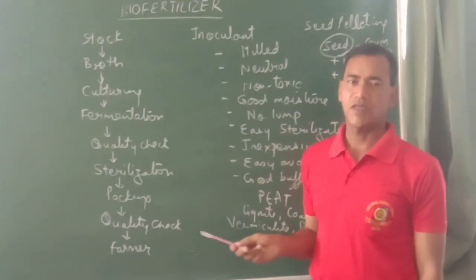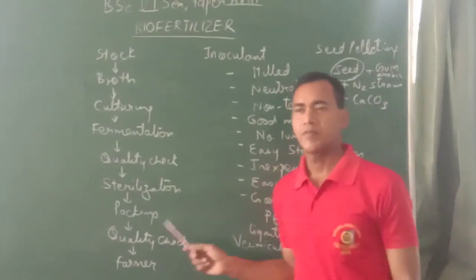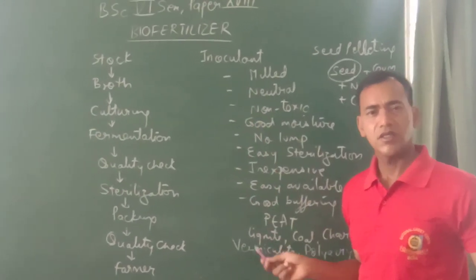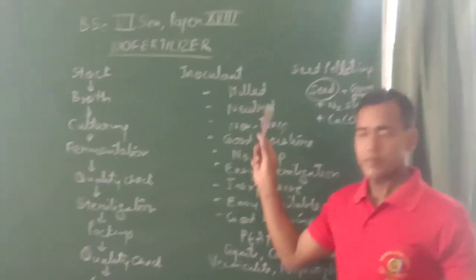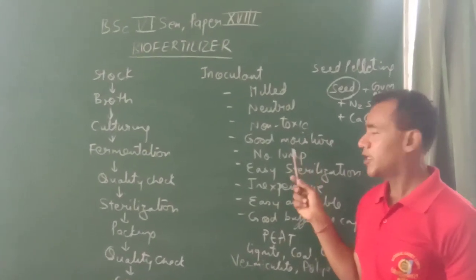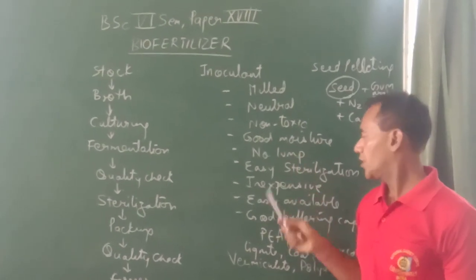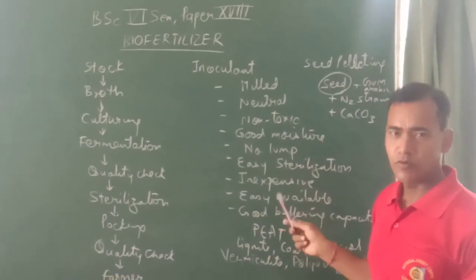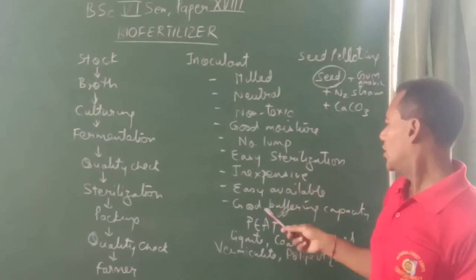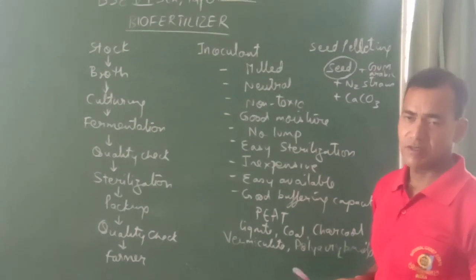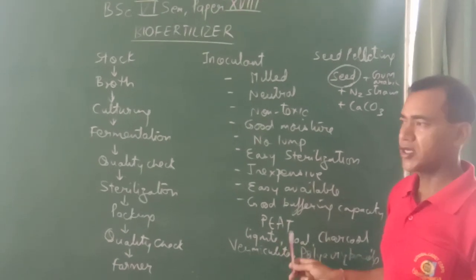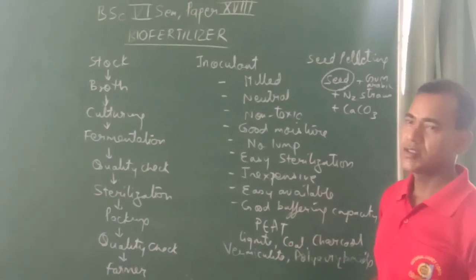After packaging, these fertilizers are provided to farmers. The inoculant being used should have the following qualities: it should be moist, have no lumps, be neutralized and non-toxic, have good moisture content, be easily available to farmers, and be inexpensive so that every farmer can purchase it. It should also have a good buffering capacity. Some very good examples of bio fertilizers are vermiculite, polyacrylamide, lignite, coal, and charcoal.